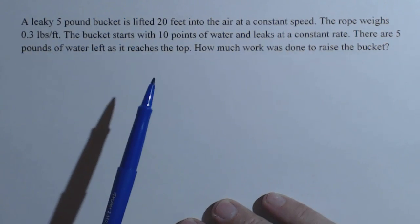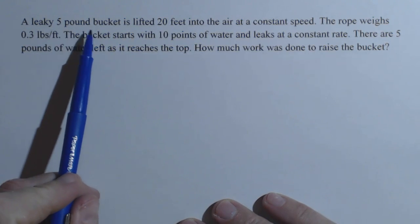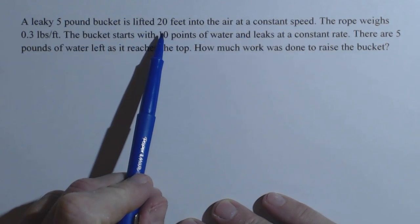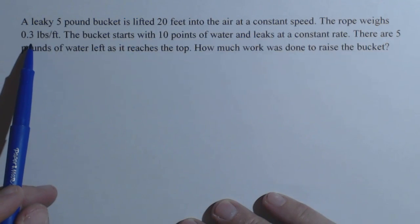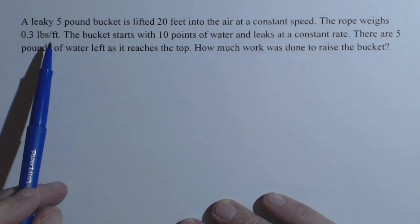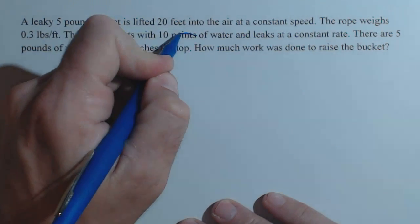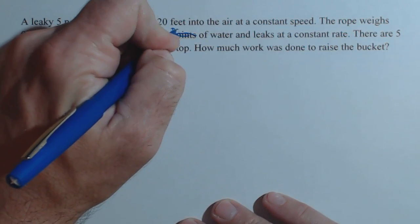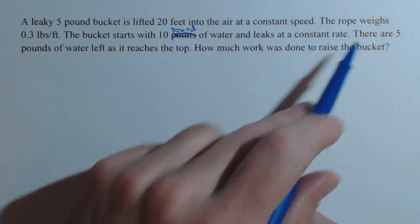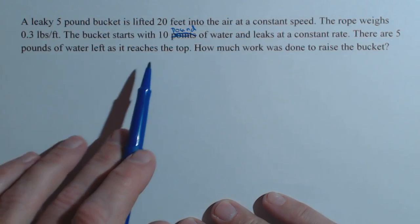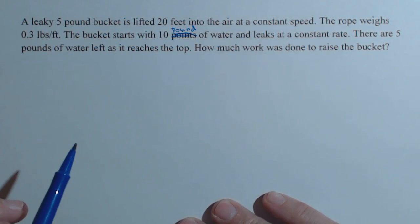So here we have a pretty standard work problem, raising a bucket. It turns out it's a leaky 5-pound bucket that's lifted 20 feet into the air at a constant speed. The rope weighs 0.3 pounds per foot, that's its density. The bucket starts with 10 pounds of water and leaks at a constant rate. There are 5 pounds of water left when it reaches the top. How much work was done to raise the bucket?